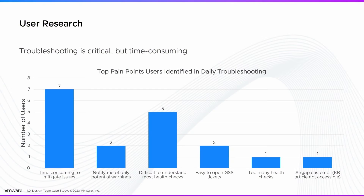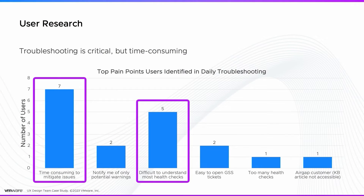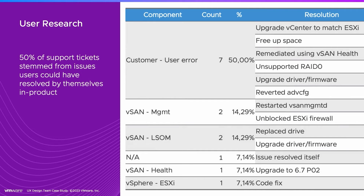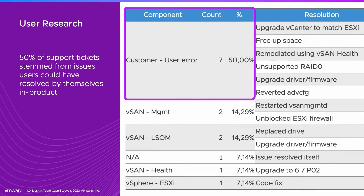Despite troubleshooting being critical, it's very time consuming for users, and they find it difficult to understand most health checks. Data from our customer support team shows that 50% of support tickets stem from issues users could have resolved by themselves in product, but the lack of clear guidance meant users resorted to seeking external help.